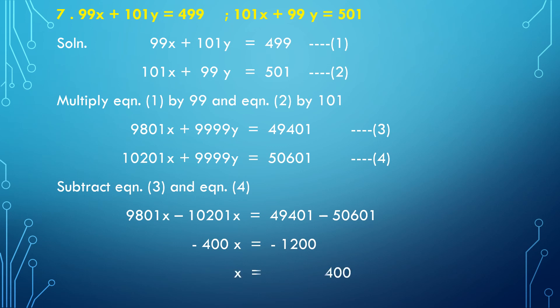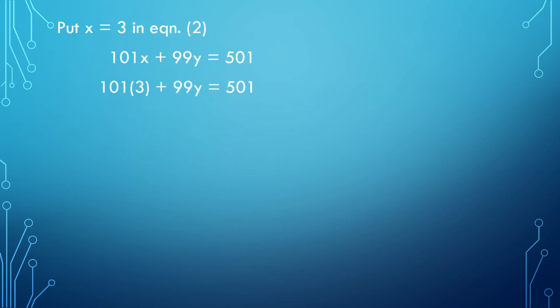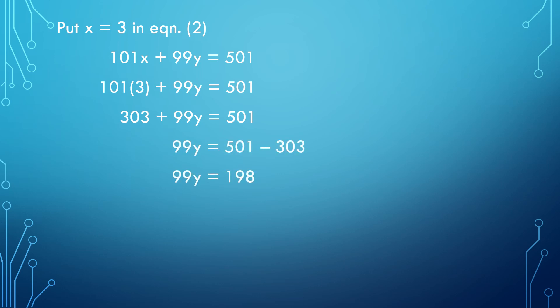The minus signs cancel, so x equals 1200 divided by 400, hence x equals 3. Now put x equal to 3 in equation number 2: 101 times 3 plus 99y equals 501. So 303 plus 99y equals 501, meaning 99y equals 501 minus 303, which is 198. Hence y equals 198 divided by 99, so y equals 2. The solution of the simultaneous linear equations is x equals 3 and y equals 2.